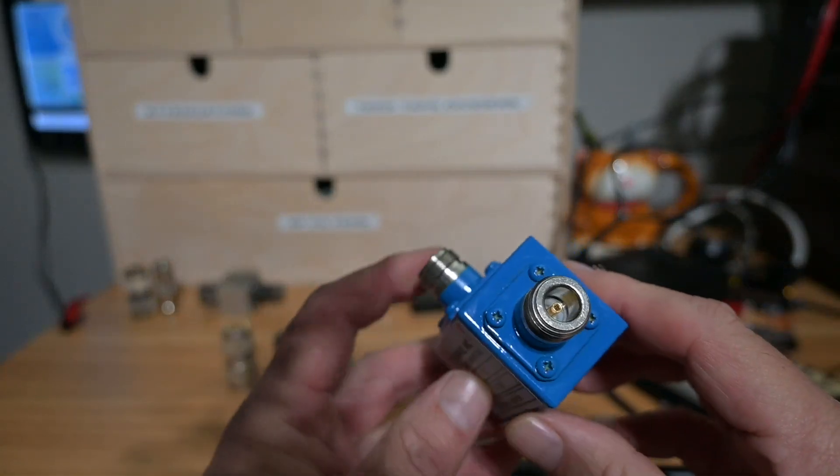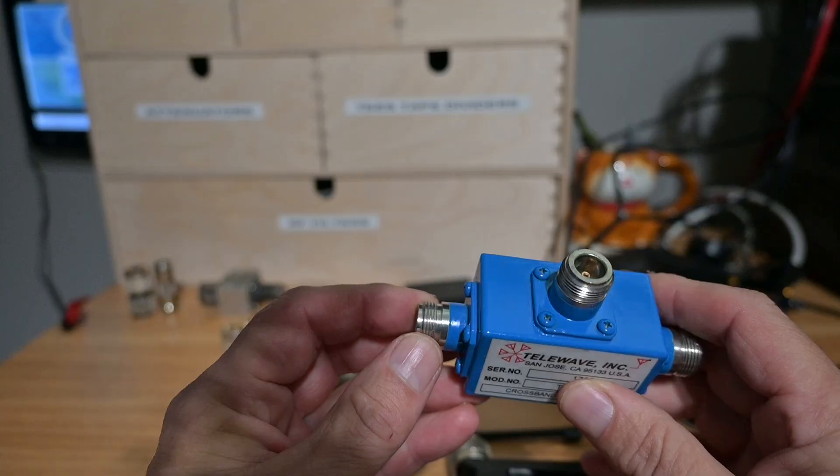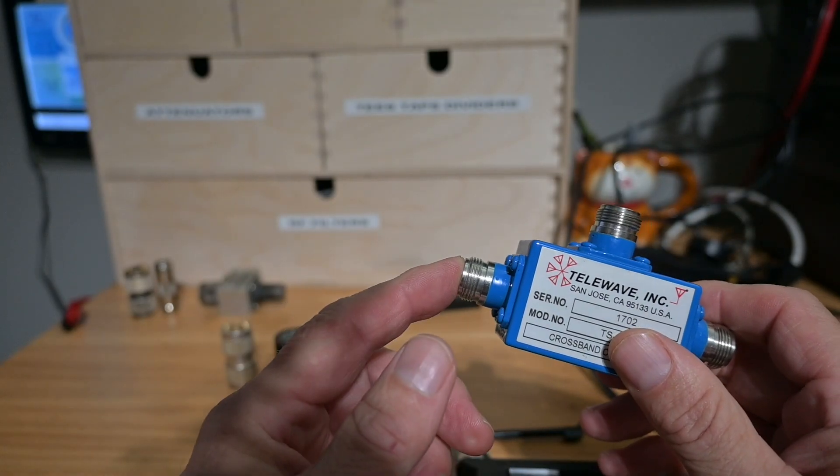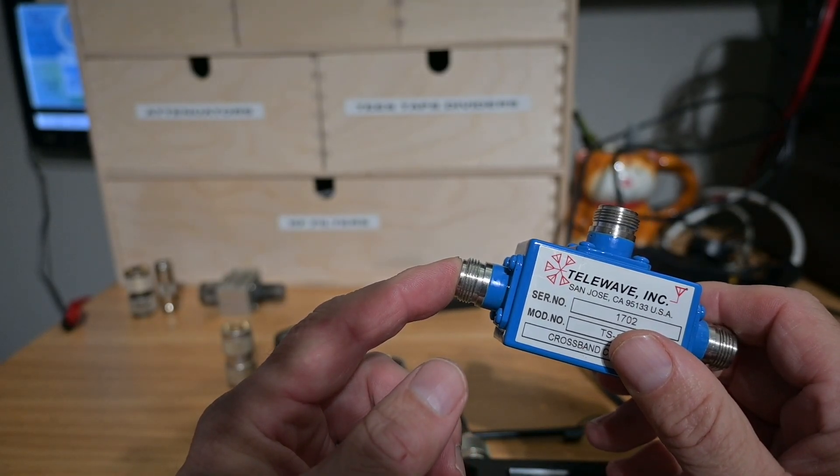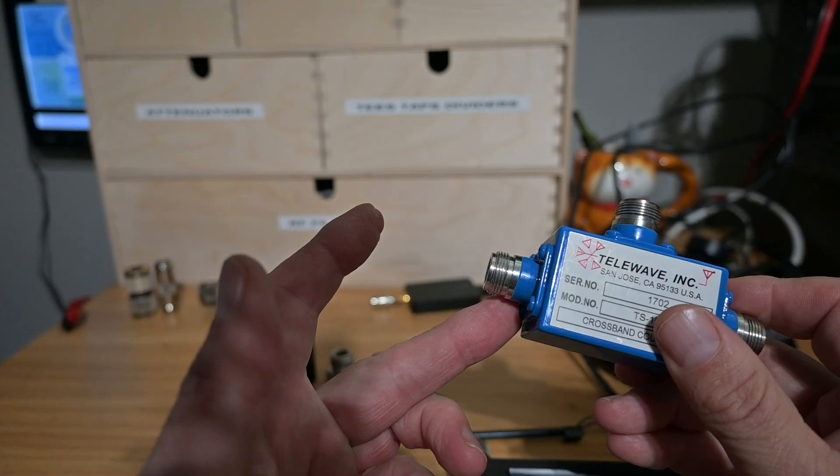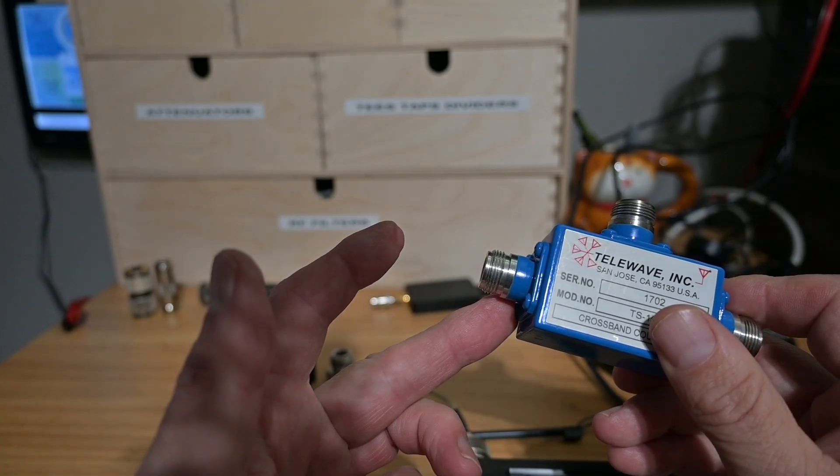Now this device is commonly used in a couple of different configurations and can simplify antenna and feed line installations by allowing transmitters of differing bands to use a common feed line.